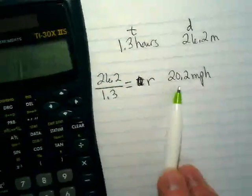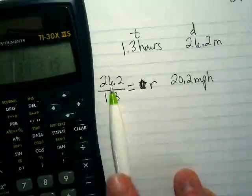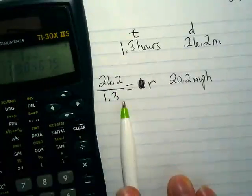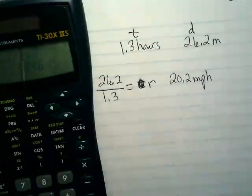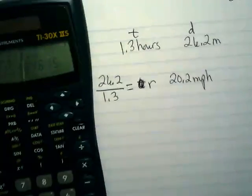And that makes sense if you think about it, because 26.2 miles in 1.3 hours, he did most of the course in an hour and had just a little bit of it to finish. Right?